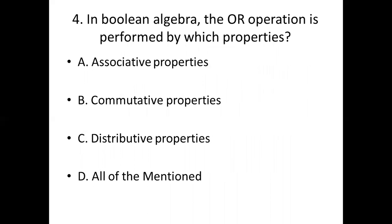Fourth bit. In Boolean algebra, the OR operation is performed by which properties? Option A: associative properties. Option B: commutative properties. Option C: distributive properties. Option D: all of the mentioned. Answer: Option D, all of the mentioned.